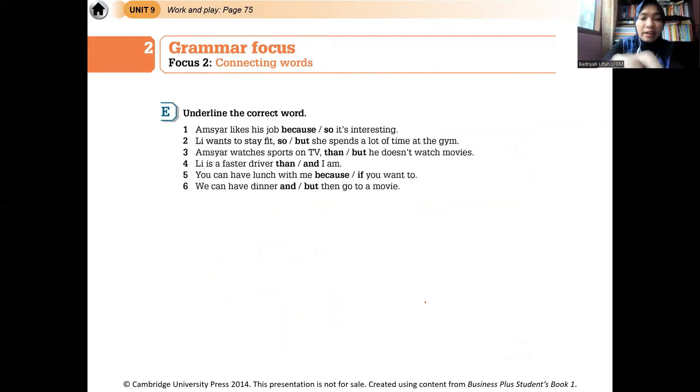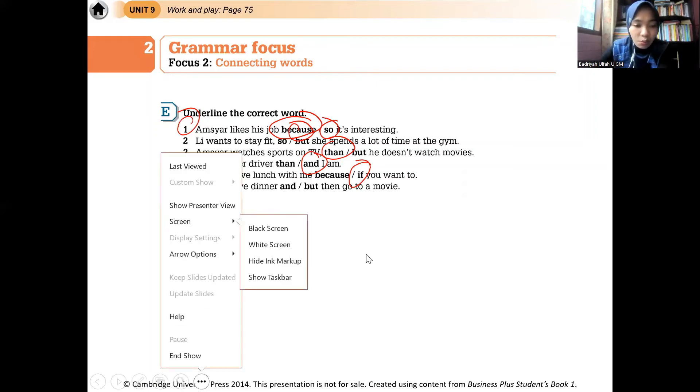Okay. So, here, silahkan nanti di-underline the correct words, di garis bawahi. Yang mana yang paling nyambung? Ini kan tinggal artinya aja ya. Misalnya nomor one nih. Amshar likes his job because atau so. It's interesting. Amshar suka pekerjaannya, karena, atau jadi. Jadi itu menarik. Nah, kira-kira yang masuk akal yang mana? Ya, kalau because itu karena, so itu jadi, but tetapi, then itu dari, ya and itu dan, kalau if itu jika. Nah, kira-kira yang masuk akal untuk menyambungkan di antara kalimat itu apa?